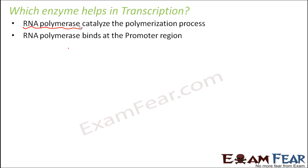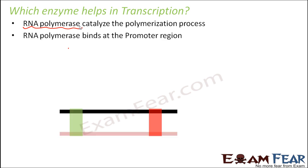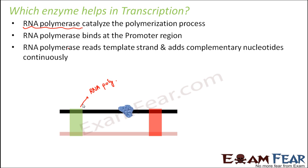RNA polymerase binds at the promoter region. So if this is the DNA, the black strand is the template strand and the green portion is the promoter. This RNA polymerase will bind at the promoter site and then it reads the template strand and adds complementary nucleotides continuously.